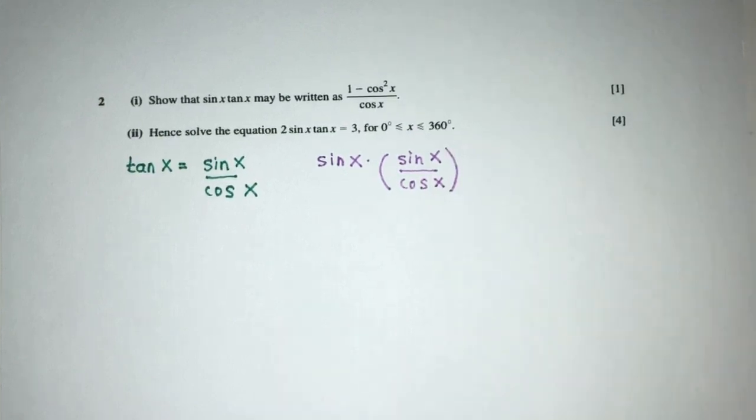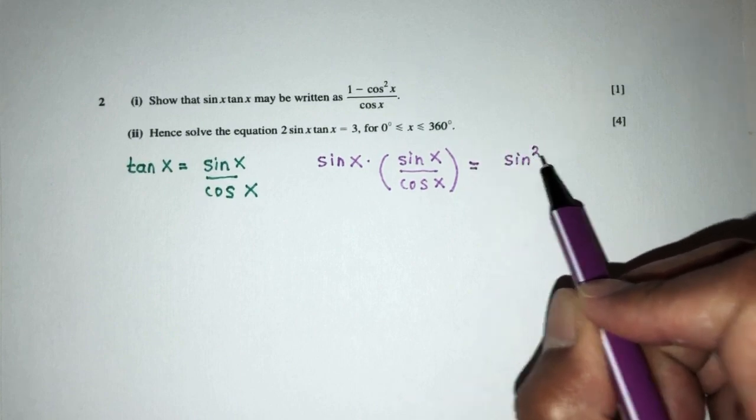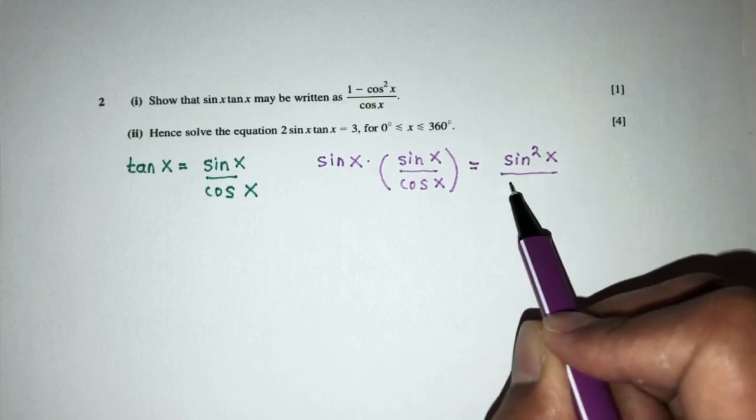Okay, now simplify. Sine x times sine x will be sine squared x, right, over cos x.